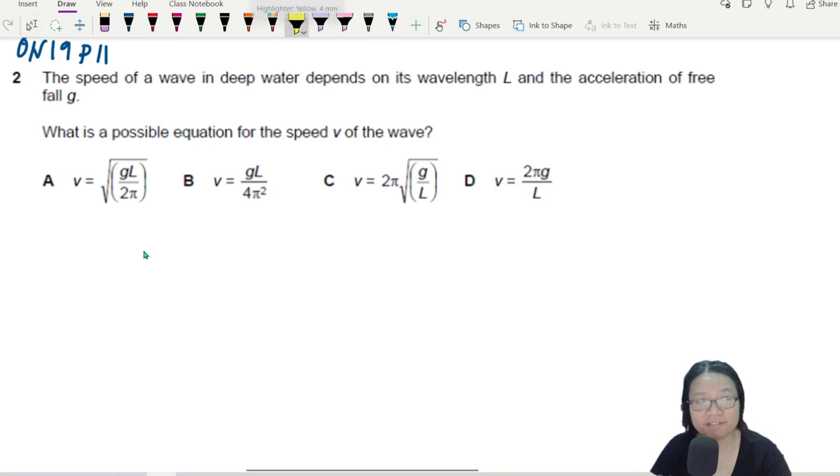The speed of a wave in deep waters depends on the wavelength L and the acceleration of free-fall G. What is the possible equation for the speed V of the wave?